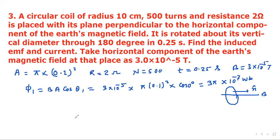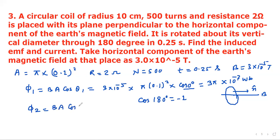When the coil is rotated through 180 degrees, theta becomes 180°, and cos 180° = −1. So φ₂ = BA cos 180° = −3π × 10⁻⁷ Wb. The change in flux, φ₂ − φ₁ = −6π × 10⁻⁷ Wb.